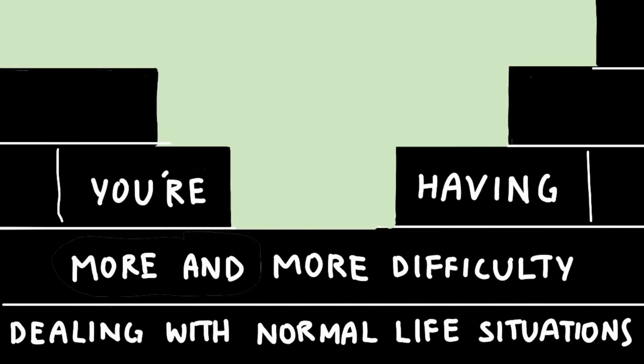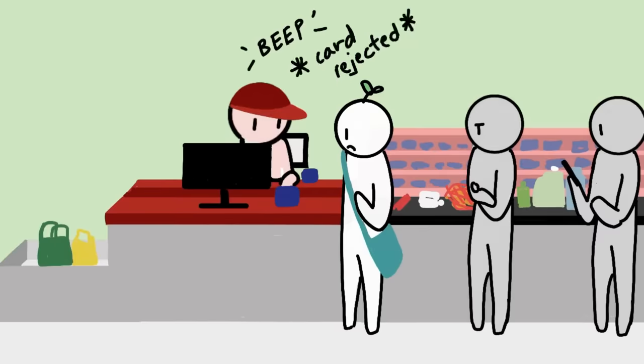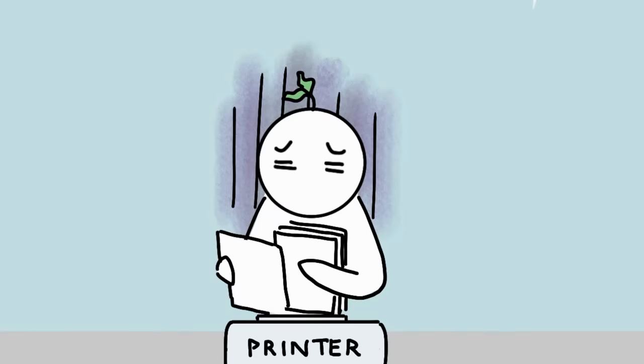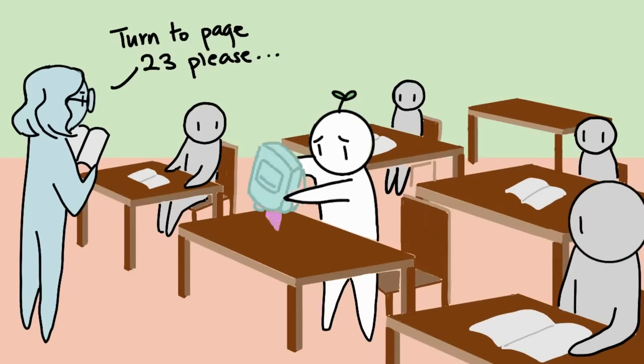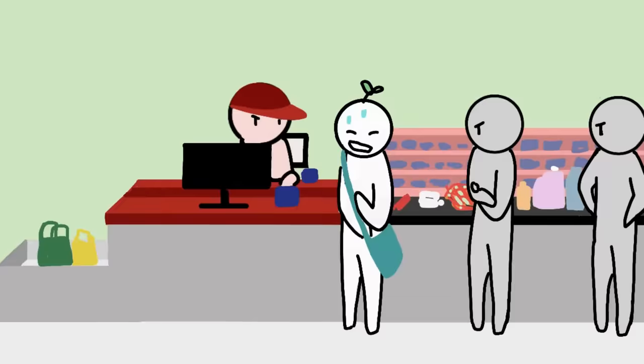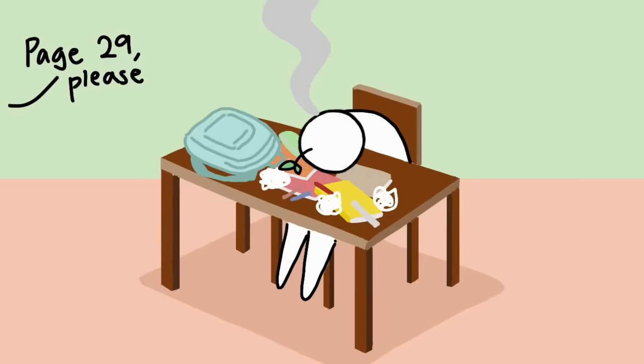Number six: You're having more and more difficulty dealing with normal life situations. Have you ever gone through a time in your life when nothing seemed to go right and you just couldn't deal? The Australian Department of Health stated a rough patch that you just can't get past, one that hurts your ability to function for more than two weeks to two months, may be a sign of depression or anxiety. A major sign that what you're experiencing is more than just a rough patch is when you have a hard time functioning in normal situations for several weeks, according to Mental Health America.